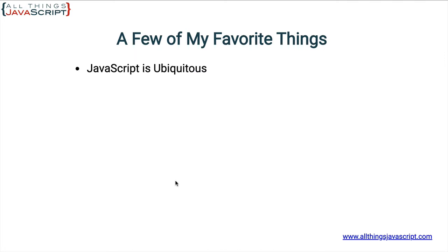First, JavaScript is ubiquitous. I like the word ubiquitous — in fact, I don't believe I even knew what it meant until it was used with JavaScript. Basically, what ubiquitous means is that it's present everywhere, and that's the nature of JavaScript. You can use it in a browser, on the server with Node, create a desktop application using something like Electron, and there are numerous frameworks for creating mobile apps using JavaScript. So it's everywhere — it's ubiquitous — and that's one of my favorite things about it.